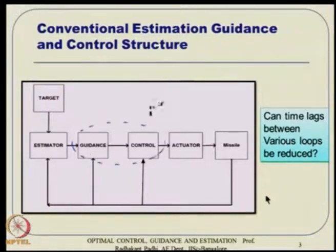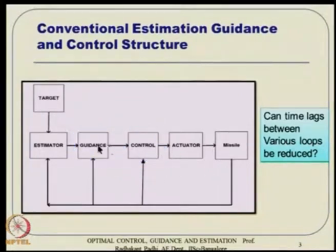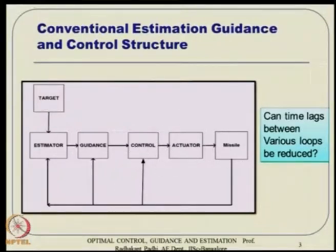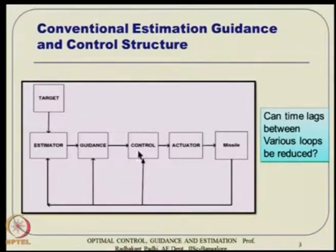The question is: can we really do guidance and control together? Guidance is typically done at the point mass or kinematic level, whereas control design is done using six-DoF equations of motion. Since six-DoF contains position and velocity information anyway, why use separate dynamics for guidance involving approximate dynamics?